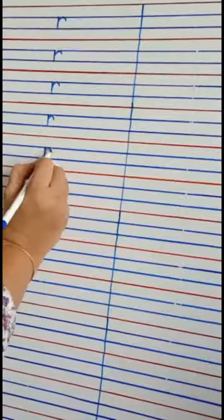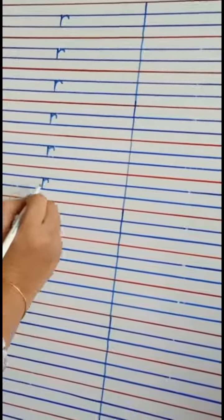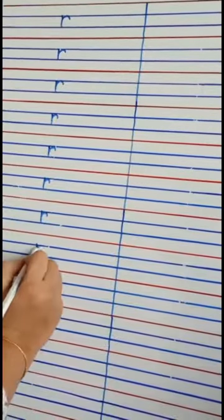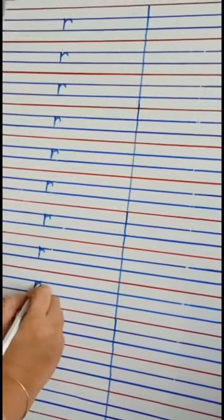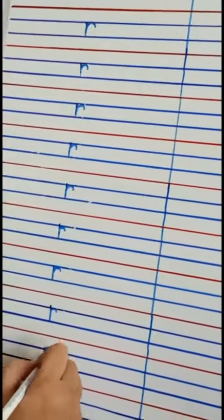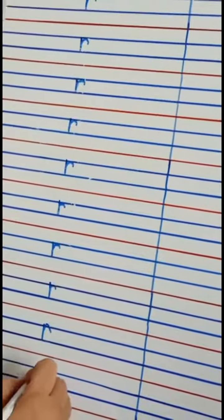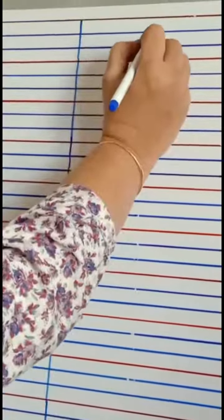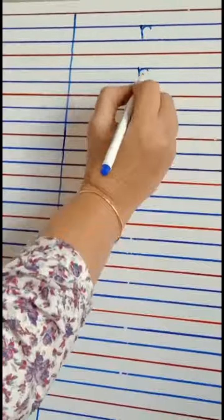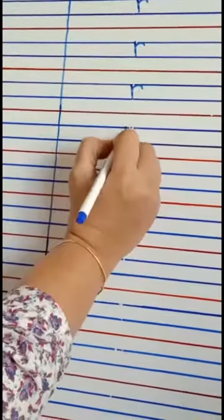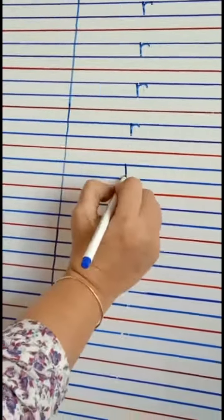R sound R. Make a standing line and two blue lines and a small curve. R R sound R. Make a standing line and two blue lines and a small curve. R R.